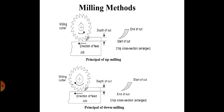The next difference: as a result, cutting force varies from 0 to maximum in up milling, and in down milling the cutting force varies from maximum to 0.